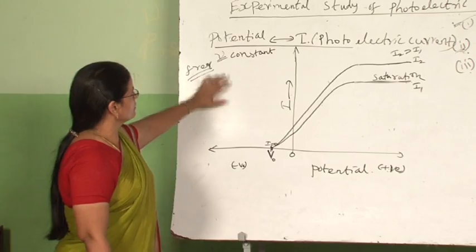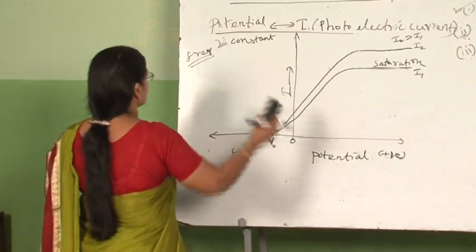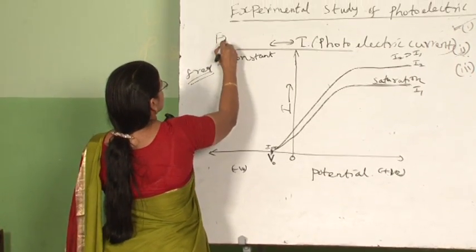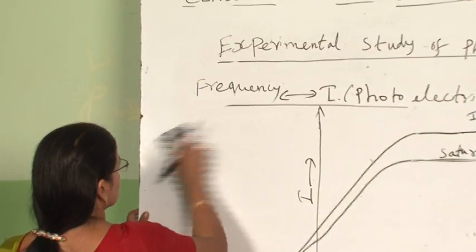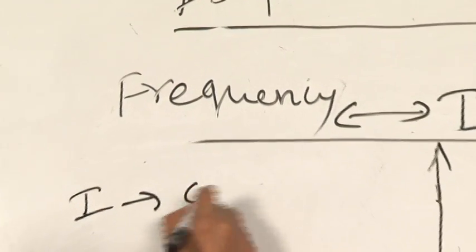This is the effect of potential on photoelectric current. Next we have to study the third factor, that is frequency. When we study the effect of frequency, we have to keep the intensity constant.